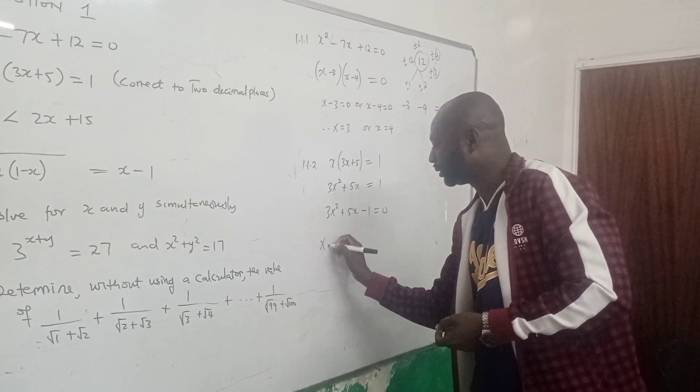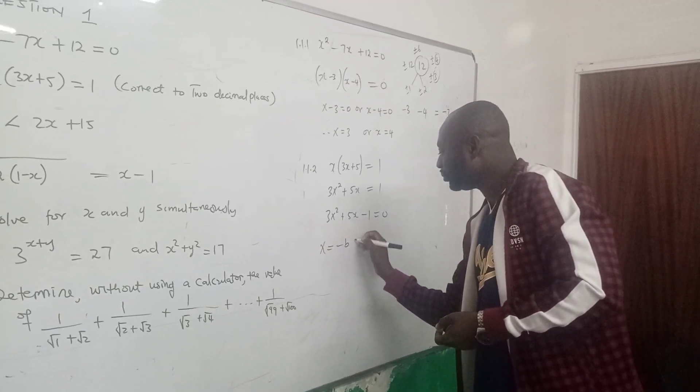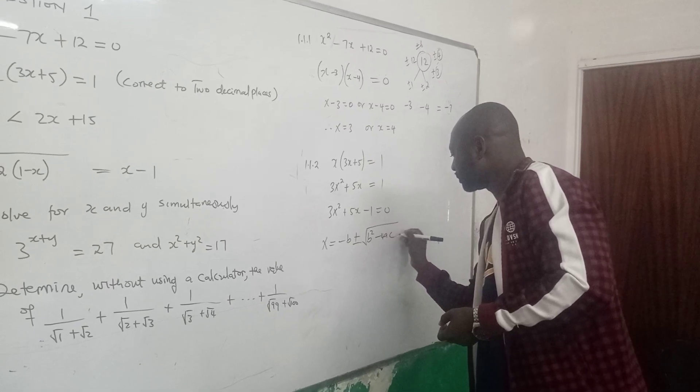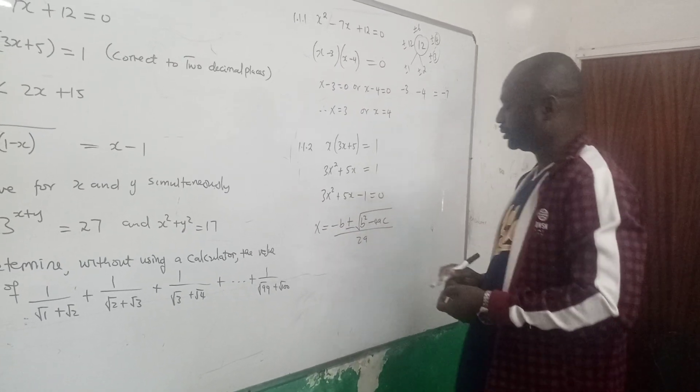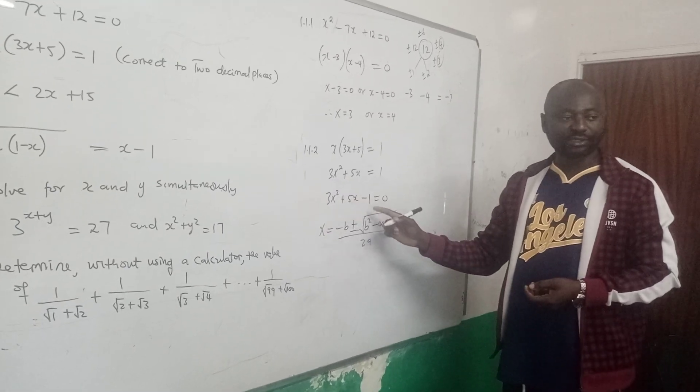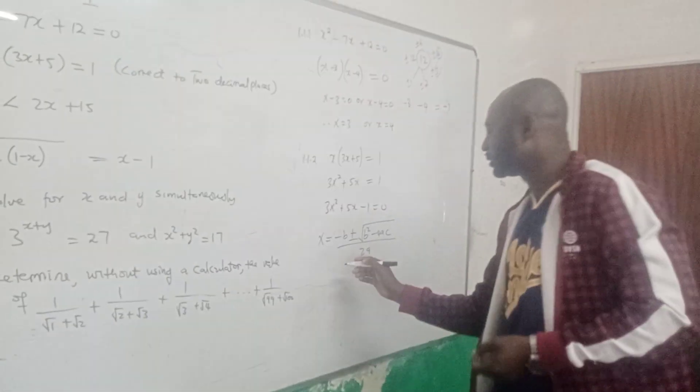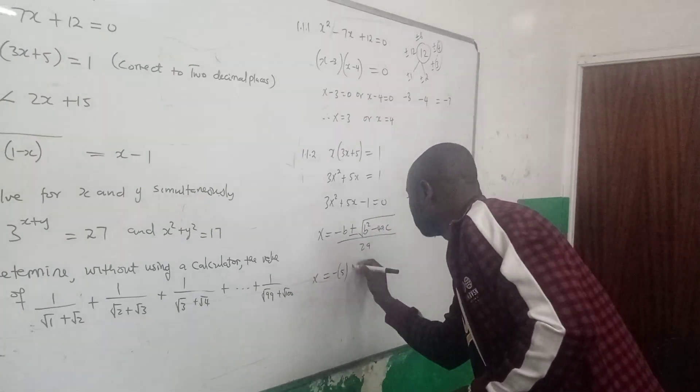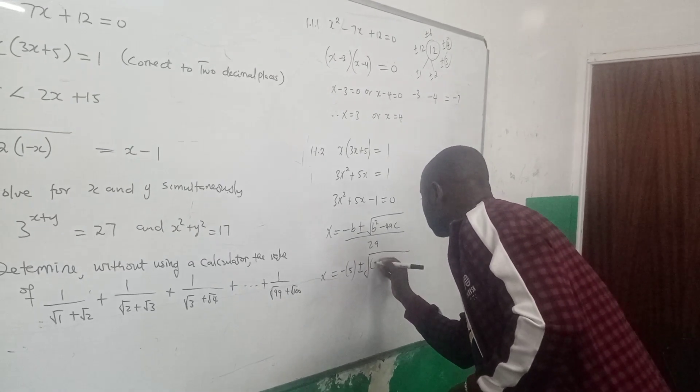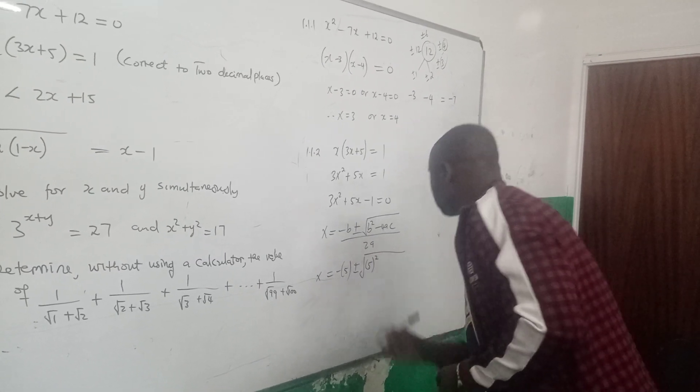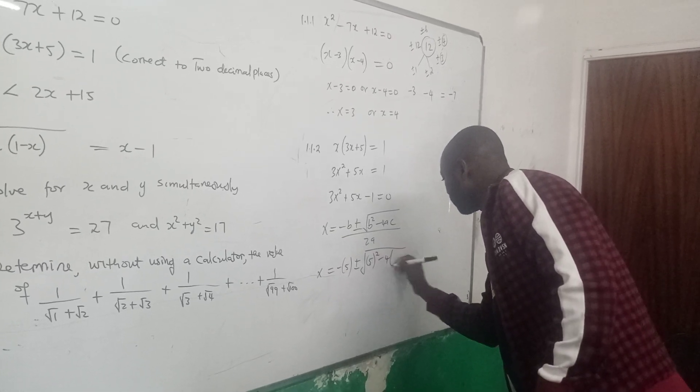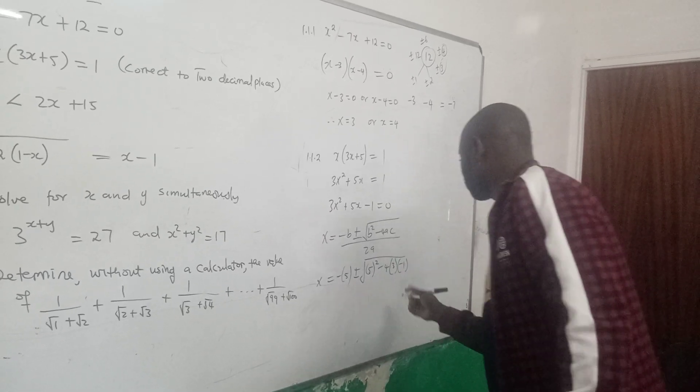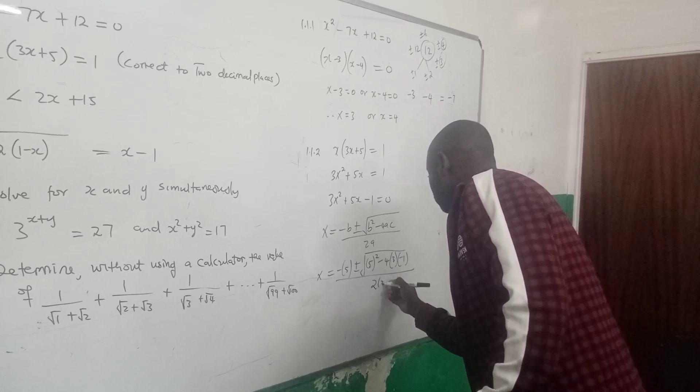From there you substitute into the quadratic formula which is x equals to negative b plus minus square root b squared minus 4ac over 2a. So you take your a is 3, your b is 5 and your c is minus 1. So let's do the substitution. We say x equals to negative, your b is 5, put in a bracket plus minus square root, your b is 5, put in a bracket again square, minus 4a where a is 3 in a bracket and your c is minus 1 and also in a bracket, then you divide it by 2 times 3.